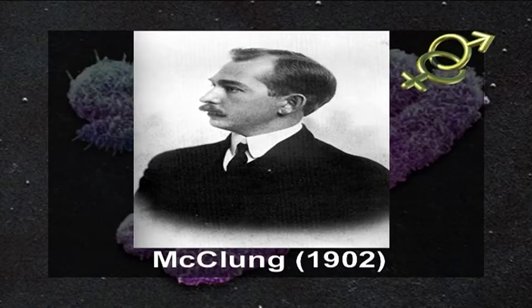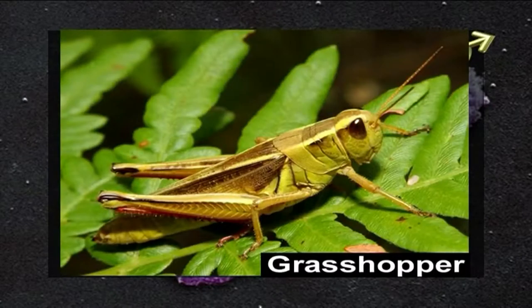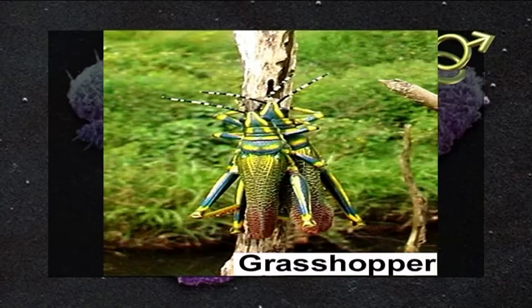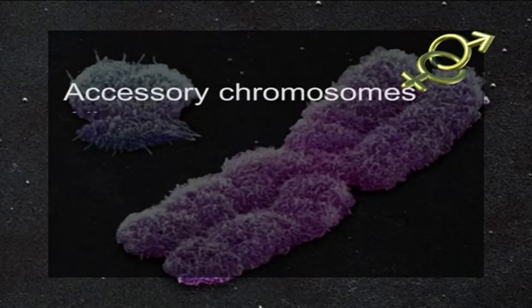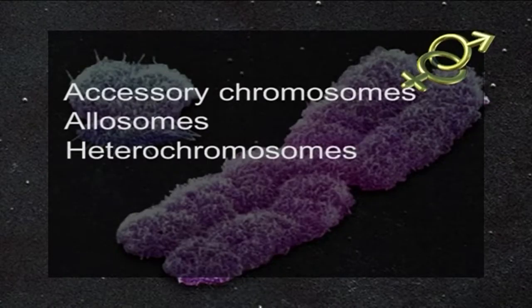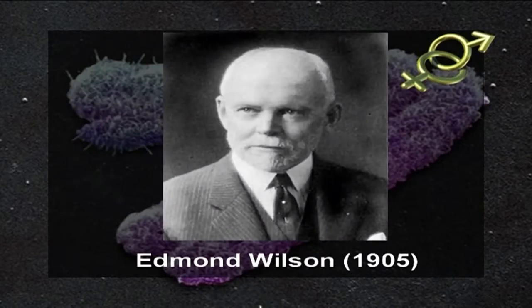The significance of X body was not immediately understood, but in 1902 an American geneticist McClung, who had made extensive observations of gametogenesis in grasshopper, suggested that the X body was involved in some way with the determination of sex. He reported that somatic cells of the female grasshopper contained 24 chromosomes while those of the male had only 23. He demonstrated that the karyotype of a cell is composed not only of common chromosomes but also of one or more special chromosomes distinguished from the autosomes by their morphological characteristics and behavior. These were called accessory chromosomes, allosomes, heterochromosomes, or sex chromosomes.